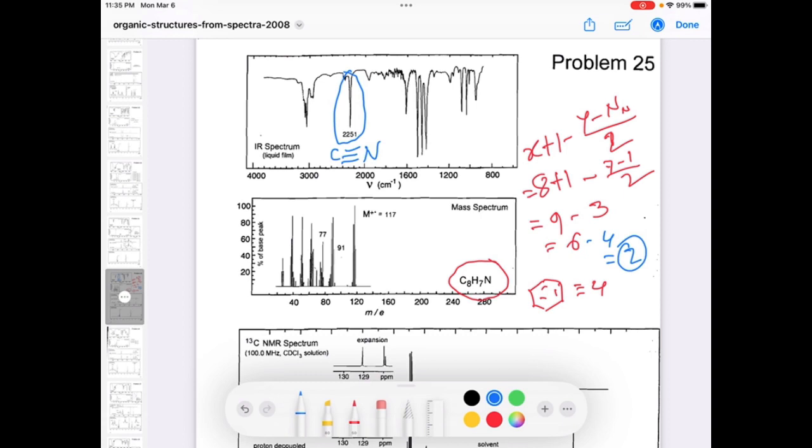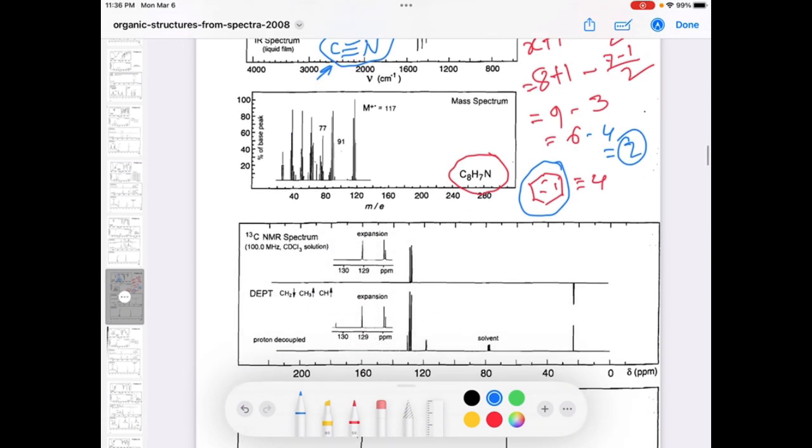So now from the IR and the degree of unsaturation calculation, we have the functional group nitrile and also we have the benzene ring. How many carbons do we have? Total 8. In the benzene ring, how many carbons? 6. In the nitrile group, how many carbons? 1. Six plus one is 7. Still we have one carbon missing.